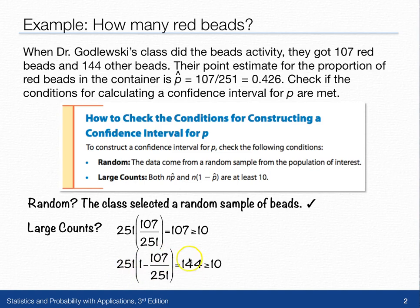251 times 1 minus that p-hat value is 144, and that's also greater than or equal to 10. So we see that the large counts condition is met.